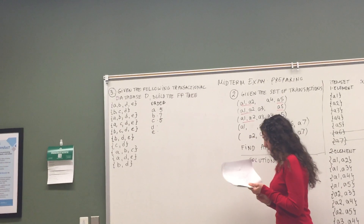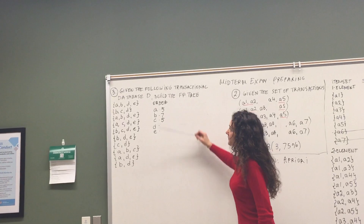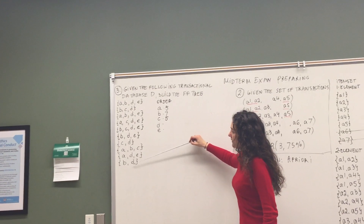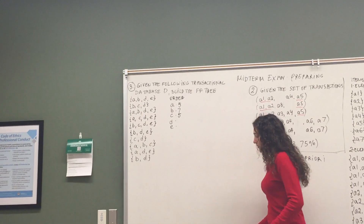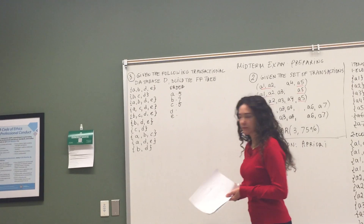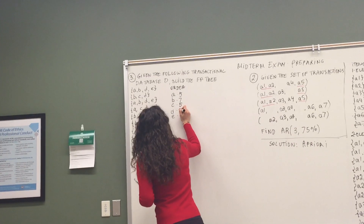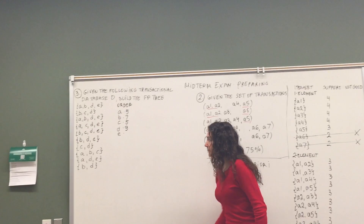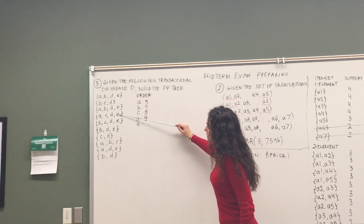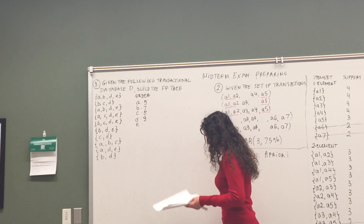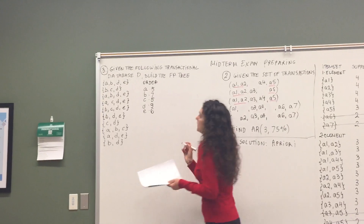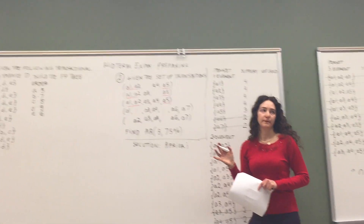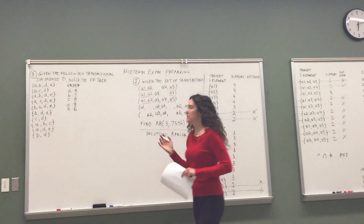And D? D appears nine times. So now we need to order them starting with D, because D is the most frequent. We order them in descending order: D is first with nine, B is next with seven, then E with six. A and C are the same number — five each — so we go by alphabetical order. So we have first A and then C. We're going to reorder the transactions by this order.